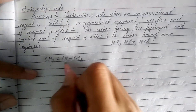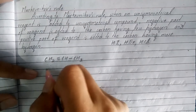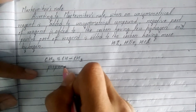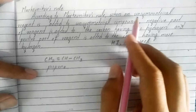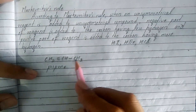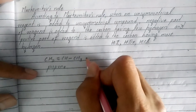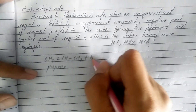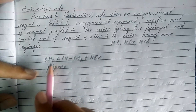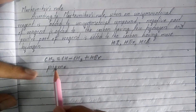What's the name? Methane, ethane, propane — with a double bond, this is propene, P-R-O-P-E-N-E. When an unsymmetrical reagent — for example, HBr — is added to an unsymmetrical compound like propene, what do we do?